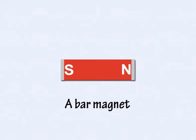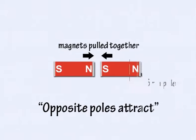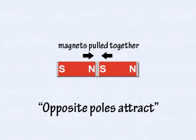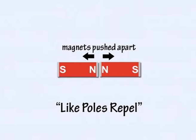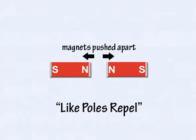A magnet has two ends or poles, a north pole and a south pole. Opposite poles of two magnets attract or pull towards each other and like poles repel or push each other apart.